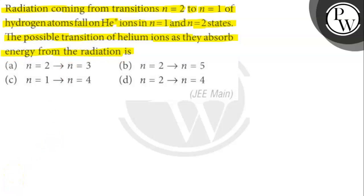The energy released by the helium atom can be found by taking the product of the energy of the first orbit of the hydrogen atom, the square of the atomic number, and the difference between the reciprocal of the square of the energy levels. First, find the energy released by the hydrogen atom, then compare it with that of the helium atom.